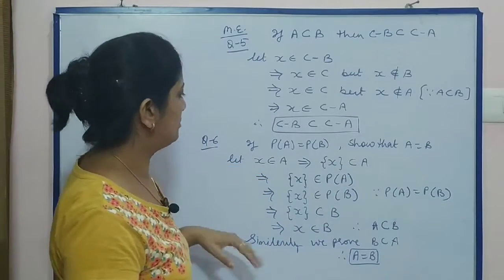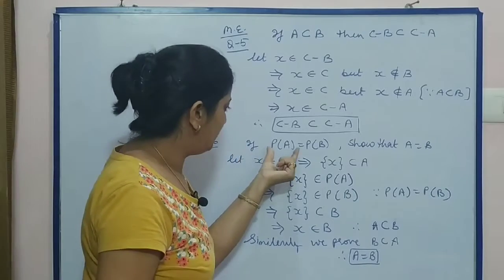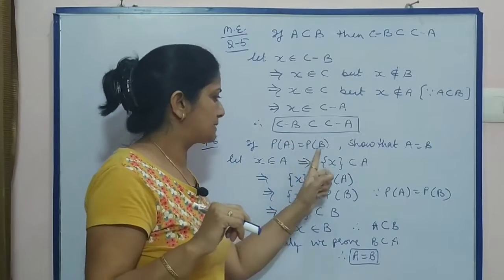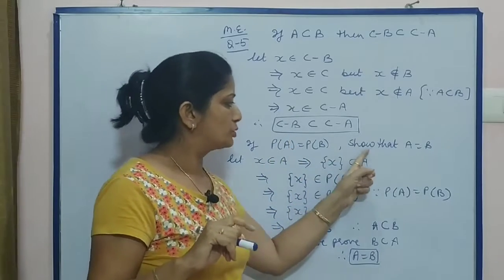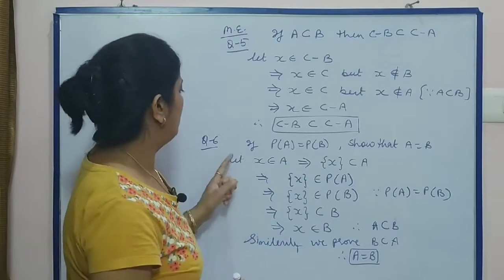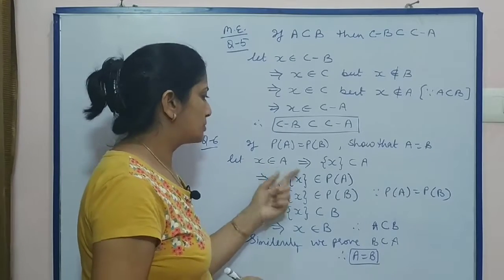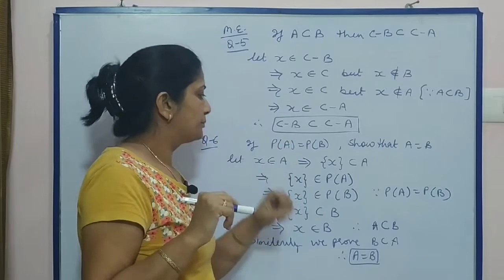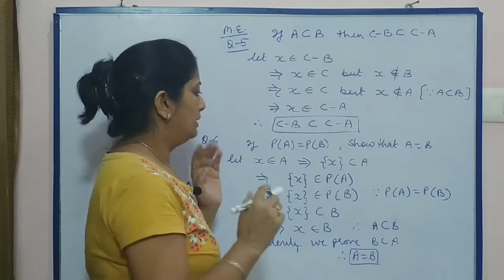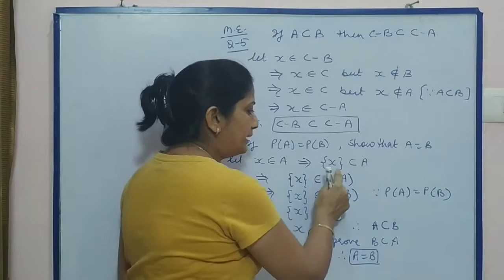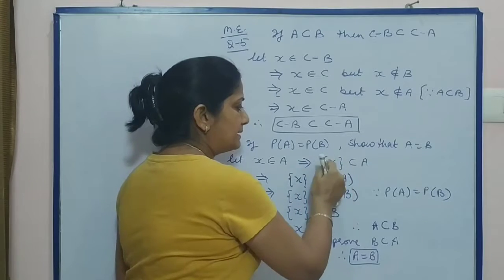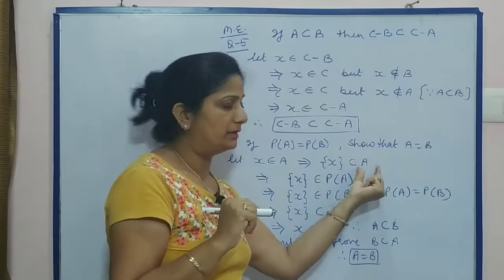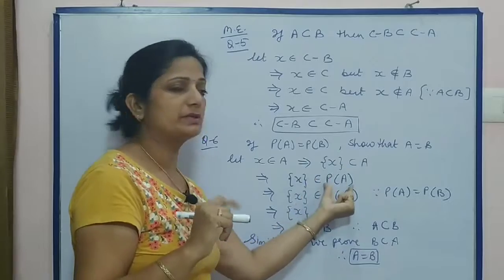Now, the next question is question number 6. If P(A), where P(A) represents power set of A, equals power set of B, show that A equals B. Again, let x belongs to A. This is a general element which belongs to set A. If this element belongs to A, then the subset containing x - the complete set {x} - is subset of A. When this is subset of A, that means this belongs to the power set of A.